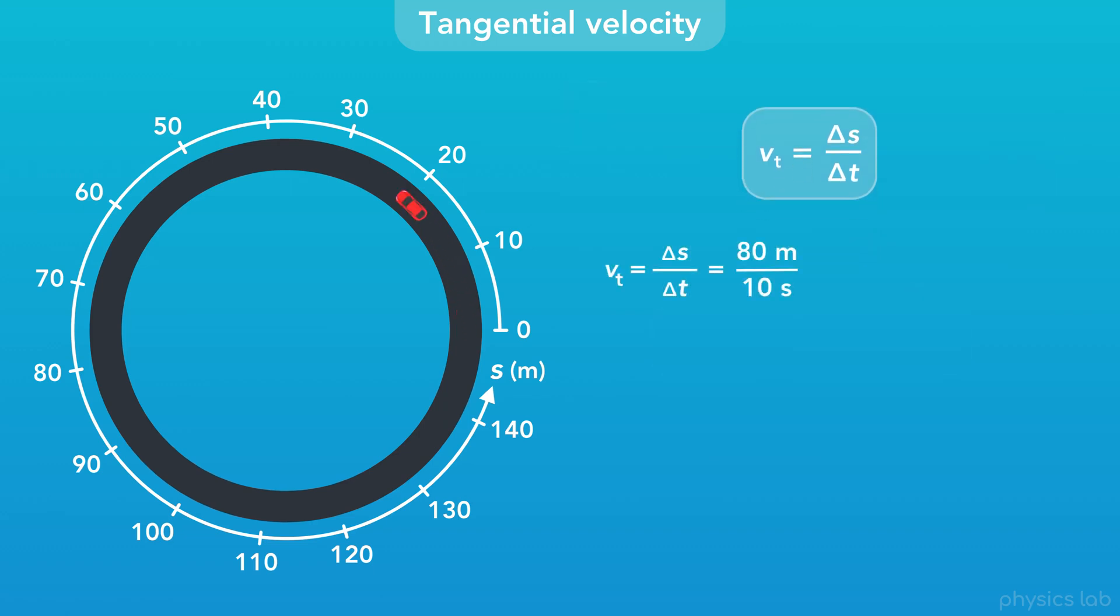As an example, if this car drove 80 meters around the track in 10 seconds, then the car's tangential velocity was 80 meters divided by 10 seconds, which is 8 meters per second, or about 29 kilometers per hour.